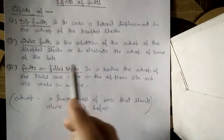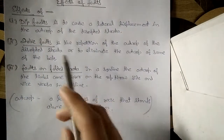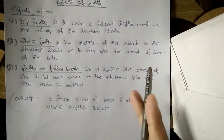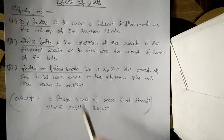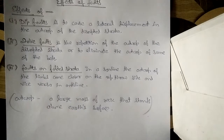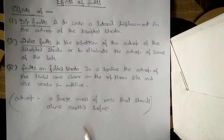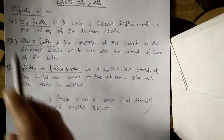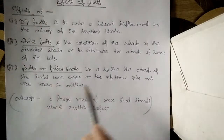The effect of a strike fault is the repetition of the outcrop of the disrupted strata, or to eliminate the outcrop of some of the beds. Due to a strike fault, the outcrop — that is, the large mass of rock — is repeatedly produced over the surface, or in some places it is eliminated or destroyed.